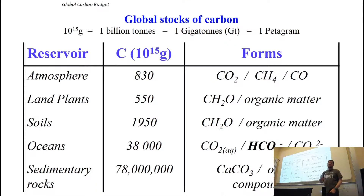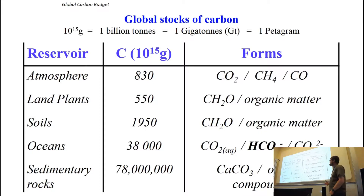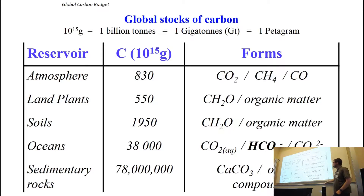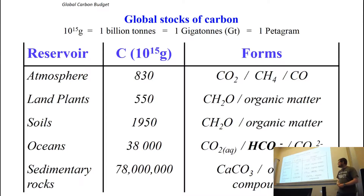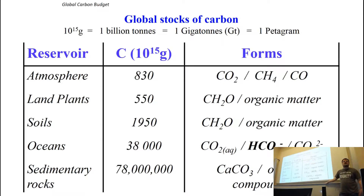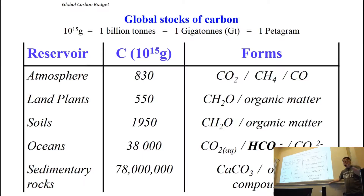Just some more details of those stocks and the forms they're in. The atmosphere is mostly made of gases, mostly CO2, but there are other forms of carbon there as well — methane and carbon monoxide. The land biosphere is mostly organic material, in plants or in soils. The oceans, which we'll come to next lecture, have dissolved inorganic species that make up most of the carbon. Sedimentary rocks are made of calcium carbonate but also organic carbon — things like kerogen, oil — little bits of those are in quite a lot of sedimentary rocks.